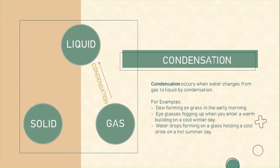Condensation occurs when water changes from gas to liquid by condensation. For example, dew forming on grass in the early morning, a glass fogging up when you enter a warm building on a cold winter day, and water drops forming on a glass holding a cold drink on a hot summer day.